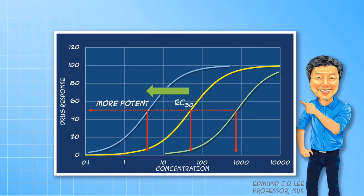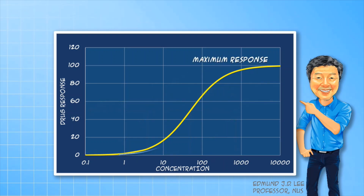Conversely, if the EC50 and the curve is shifted to the right, the potency is lower. If the maximum response for a particular drug is lower than other drugs acting at the same receptor, we can call this drug a partial agonist. Such partial agonists can also function as partial antagonists. The analgesic pentazocine, for example, is a partial agonist at the opioid receptor.